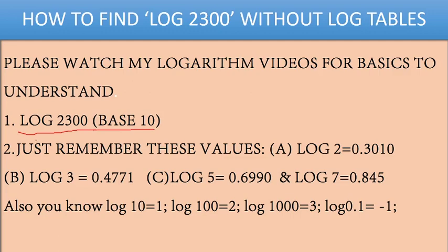Before solving without log tables, I'll give you basic values to remember. You should always remember these five values: log 2 is 0.3010, log 3 is 0.4771, log 5 is 0.6990, and log 7 is 0.845.